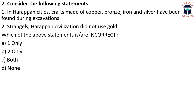The next question also relates to the Harappan civilization. Statement one: Harappan city crafts made of copper, bronze, iron, and silver have been found during excavations. Statement two: Harappan civilization did not use gold. We have to identify which of the above statements is incorrect. Both statements are incorrect — crafts were made of copper, bronze, and silver, but not iron, and Harappan people did know about gold.